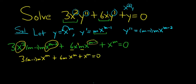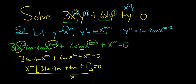So now we can pull out x to the m. So we have 3m minus 1, m, plus 6m, plus 1, bracket, equals 0. Then we would divide by x to the m to get rid of it. These cancel.